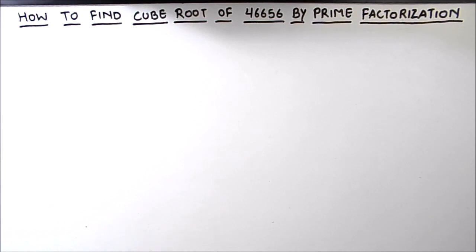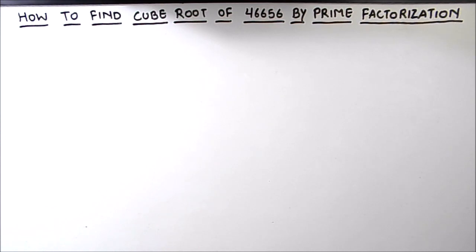You must be aware of the prime factorization method. In this method we find the factors of the number by dividing it by prime numbers, then writing the number as the product of its prime factors, and then finding the cube root.